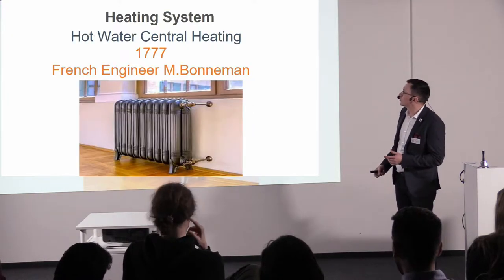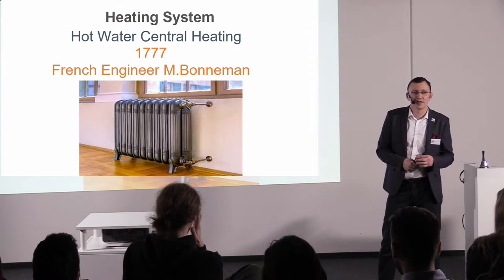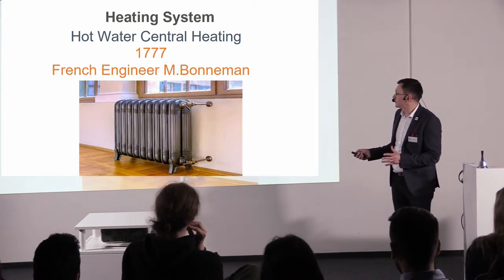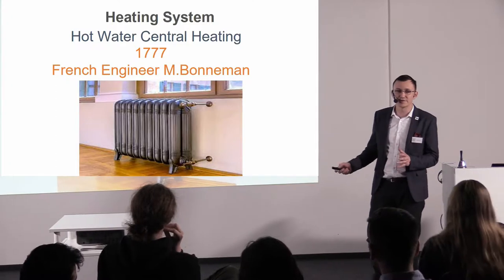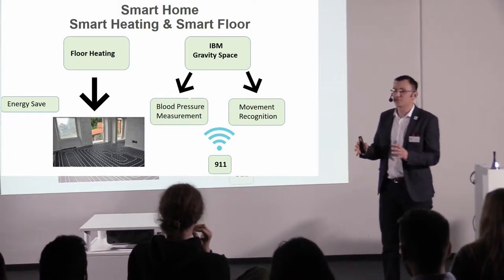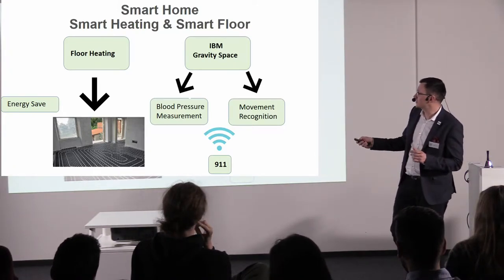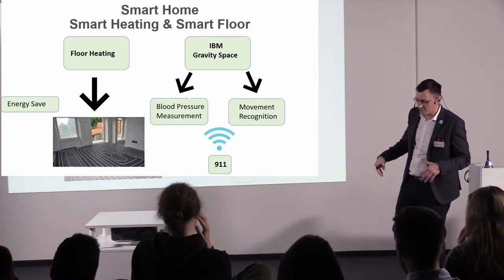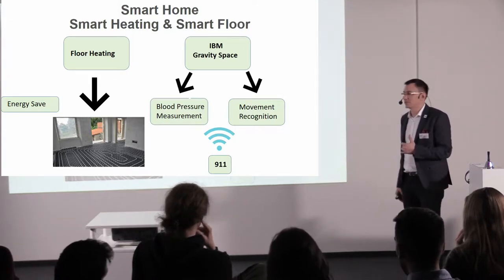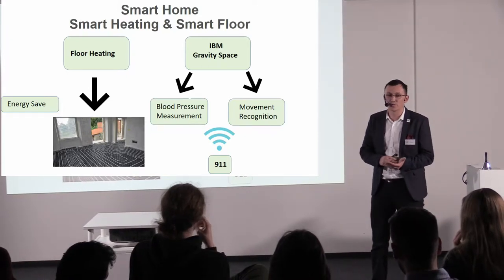The third step was the hot water central heating system, created in 1777 by a French engineer. It was much safer and could save space — the structure involves warm water circulating inside. The next step was smart heating. I want to separate two parts: smart heating means all the heating systems are mounted in the floor, which saves space — we don't need something nearby, it can go underground, under the floor. It can also save energy because it's controlled by a computer, so it's not heating the house while we're sleeping.